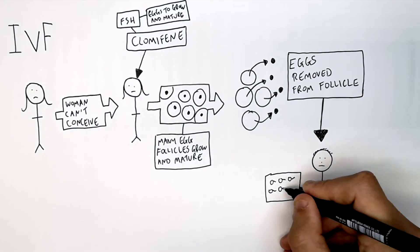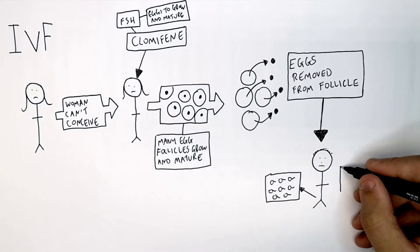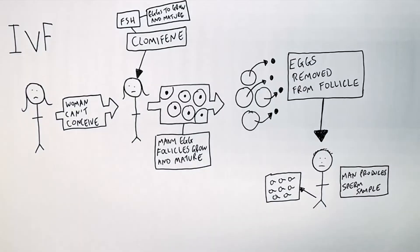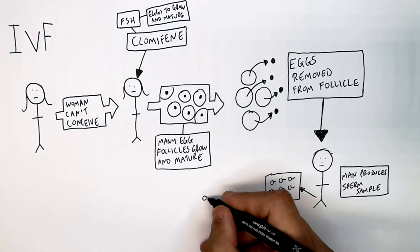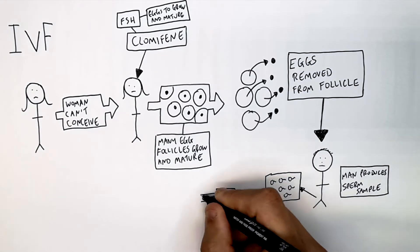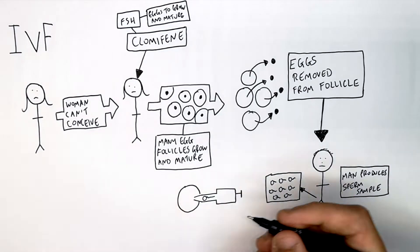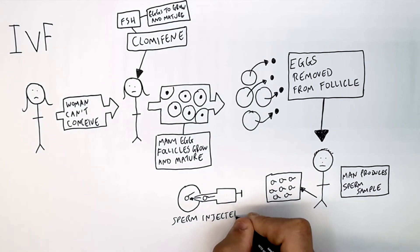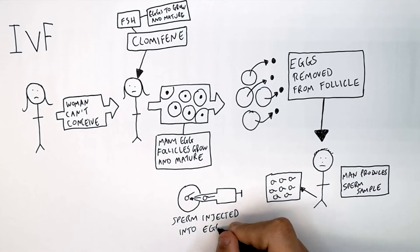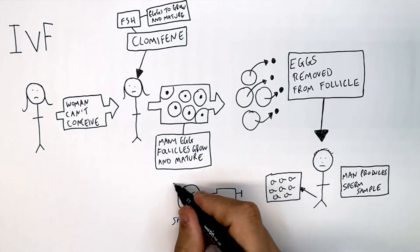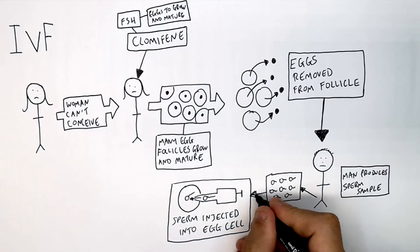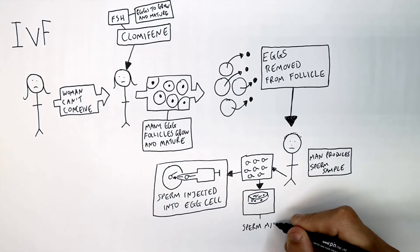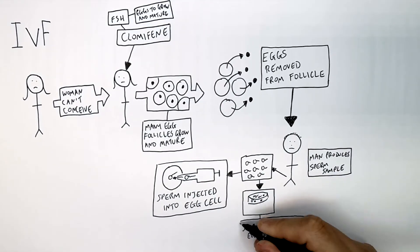A man must produce a sperm sample. Modern technology now allows for sperm to be injected directly into the egg cell, or the sperm sample can be mixed with the eggs.